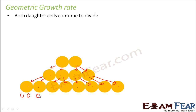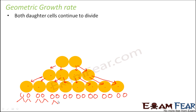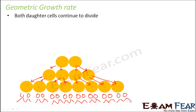Each of the eight cells will form two more, so sixteen cells will be formed. And again each of them will divide further to form two cells each. Just see how many cells are being produced in this case — the number of cells produced is huge. In a very short period of time a huge number of cells will be produced. Therefore the growth rate in case of geometric growth rate is very, very fast.